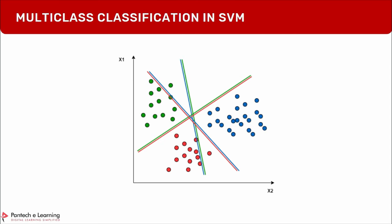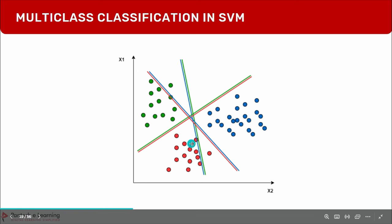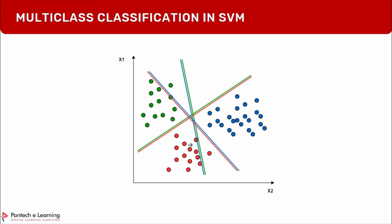For multi-class classification in SVM, it uses one-versus-rest. One class is taken and the remaining classes are considered as another class. Based on probability — similar to how logistic regression handles multi-class — the same concept is applied here.